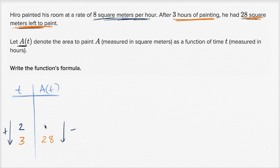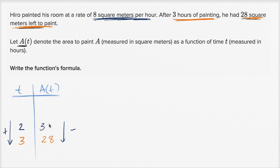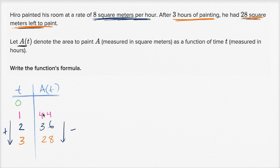At two hours, he should have more to paint than at three hours, because a of t is how much he has left to paint. Between two and three hours, he would have painted eight square meters. So at two hours, he would have had eight square meters more to paint — adding eight to 28 gives 36. At one hour, he would have had eight more square meters to paint: 36 plus eight is 44. And at zero hours, 44 plus eight is 52.